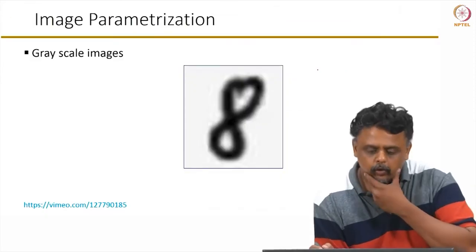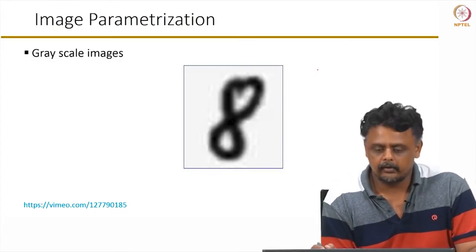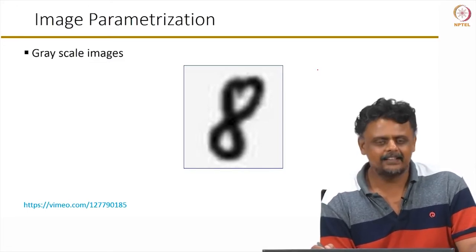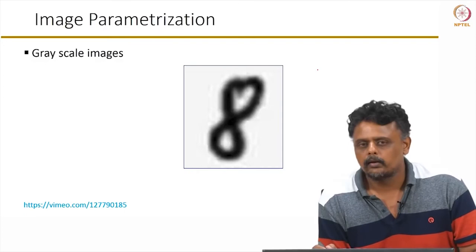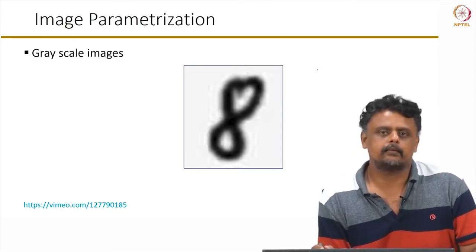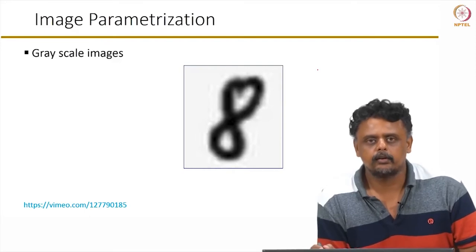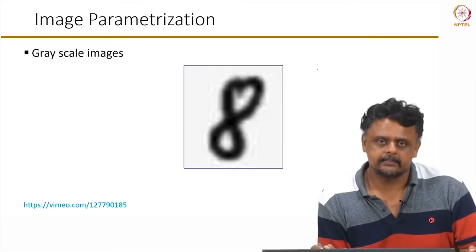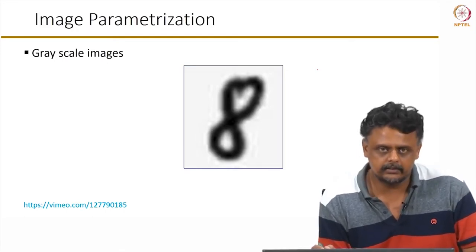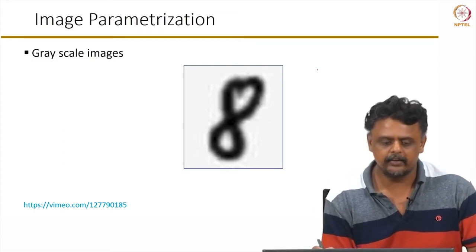Before moving on to how CNNs work, let us look at how images are parameterized. For a regular ANN, the input is usually a vector of values. For a CNN, the image is the input. If you take a grayscale image — say an image of the digit 8 — you can think of it as a 2D matrix made up of pixels, with each pixel having a particular numerical value. In a typical camera image, pixel values range from 0 to 255, referred to as 8-bit images.